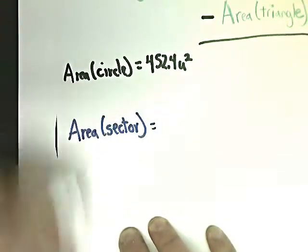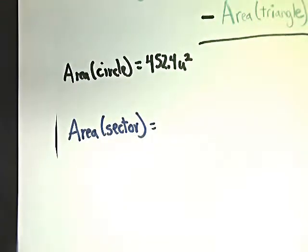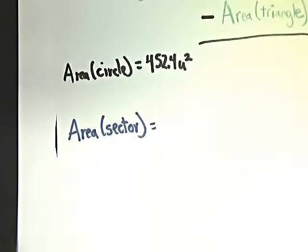I can find the area of sector by creating a proportion because I have two characters: the whole circle and the sector. I have three pieces of information — I know the measure of the central angle, I know the combined sum of all internal angles of the circle, and I also happen to know the area of the circle. So that's three parts with two characters; I'm looking for the fourth one.